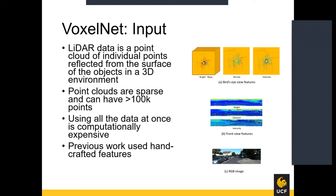For example, the images on the right show the input to a framework called multi-view 3D object detection, which was one of the high-performing architectures for 3D object detection at its time. Image A shows the handcrafted features from the bird's eye view, Image B shows the features from the front view, and C is the RGB image.